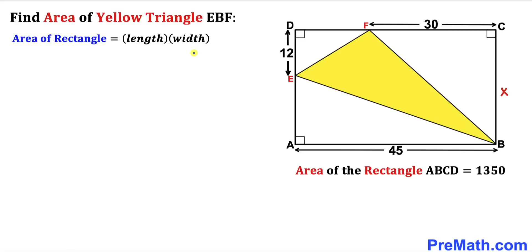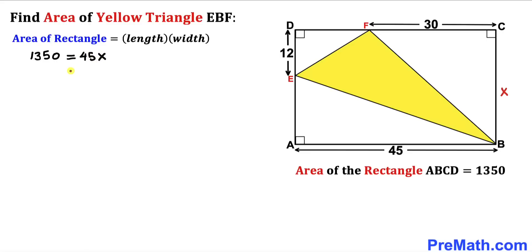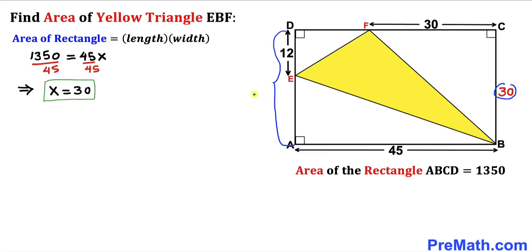Let's focus on this rectangle. Its dimensions are 45 and X, and the area is 1350. So: 1350 equals 45 times X. Dividing both sides by 45 to isolate X gives us X equals 30. So side BC is 30 units, and therefore side AD is also 30 units.